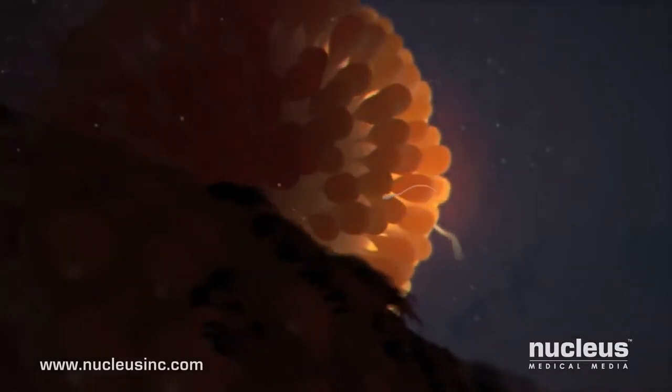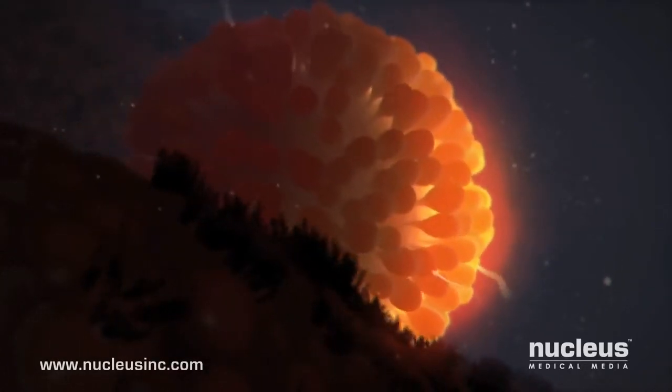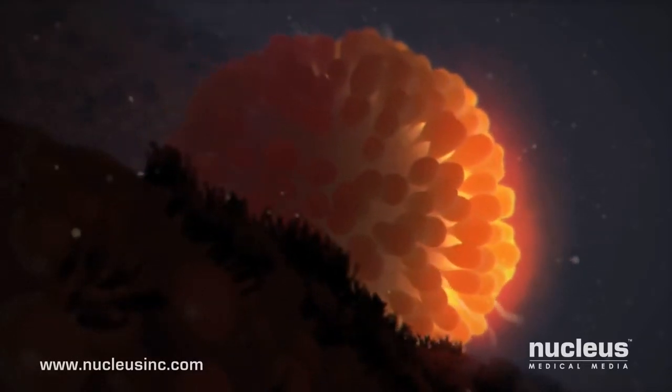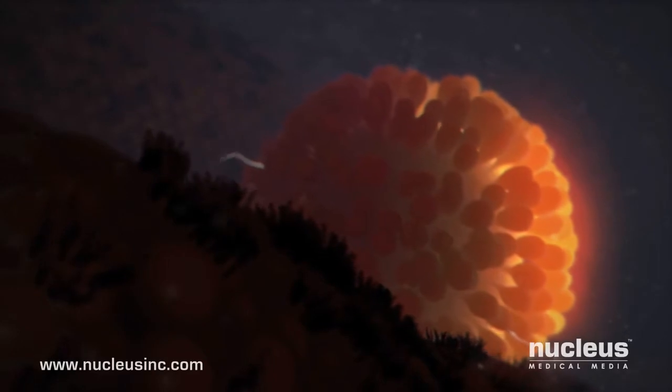And now the cilia in the fallopian tube gently sweep the zygote toward the uterus, where he or she will implant in the rich uterine lining, growing and maturing for the next nine months until ready for birth.